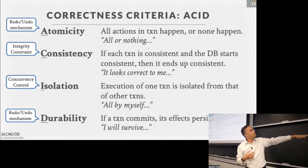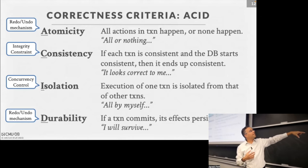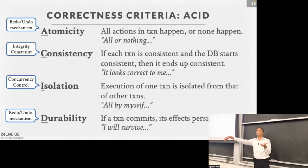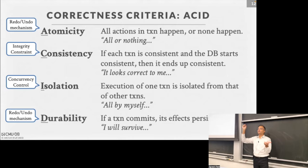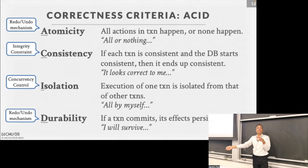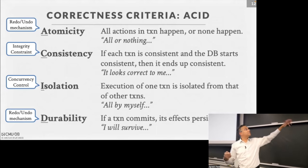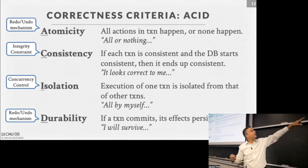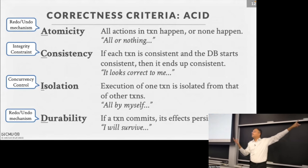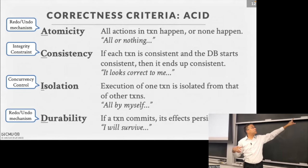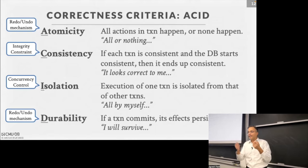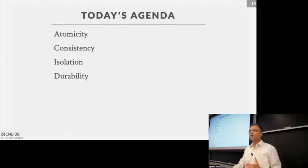The mechanisms for ACID: Atomicity and Durability require redo and undo mechanisms. If I changed A, pushed it to disk, but need to abort, how do I undo that? If I committed a transaction but the new value is still in the buffer pool and didn't make it to disk, I need to redo the disk copy. Consistency is provided by integrity constraints in the SQL DDL. Isolation is done by something called concurrency control, using locking and other mechanisms.